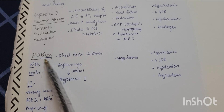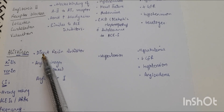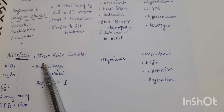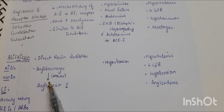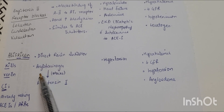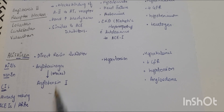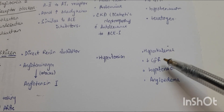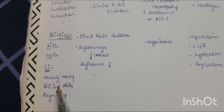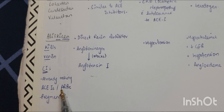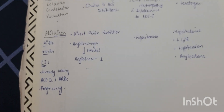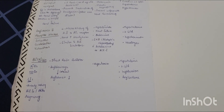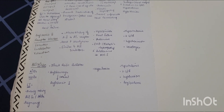Aliskiren is a direct renin inhibitor — it kills renin, basically decreasing renin activity. It blocks the conversion of angiotensinogen to angiotensin 1. Its main use is in hypertension. Adverse effects include hyperkalemia, decreased GFR, hypotension, and angioedema. It is contraindicated if already taking ACE inhibitors or ARBs, and in pregnancy.